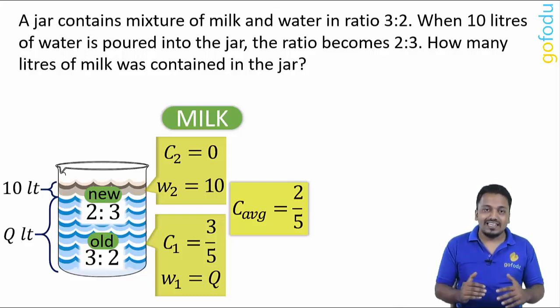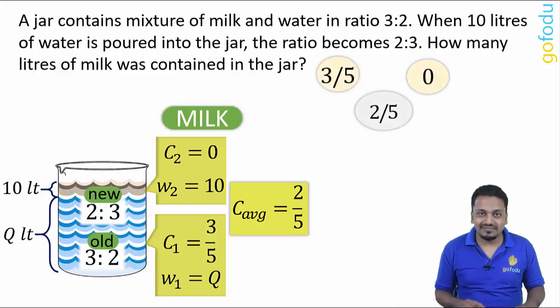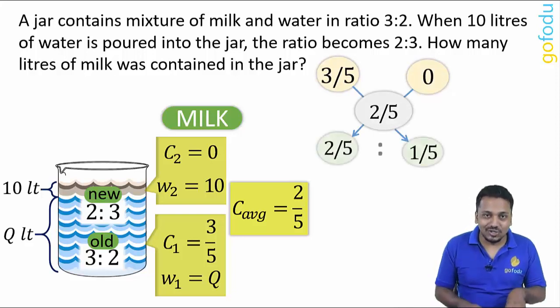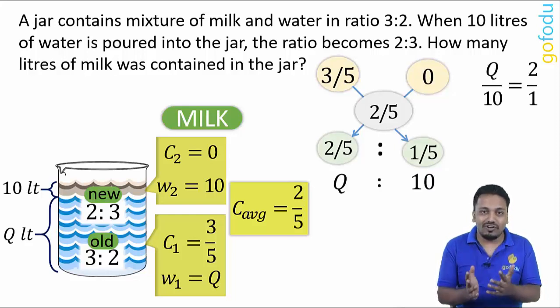Now apply allegation. C1, C2, C_average - subtract crosswise. This ratio is equal to W1:W2 or Q:10. Q will come out to be 20 liters.